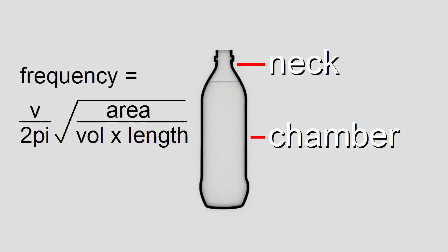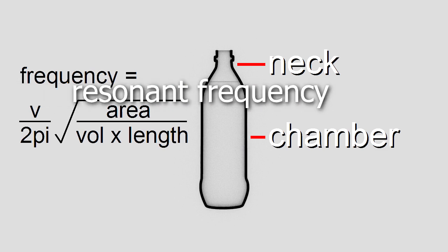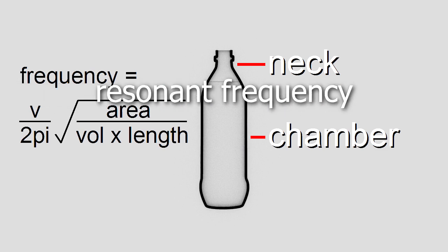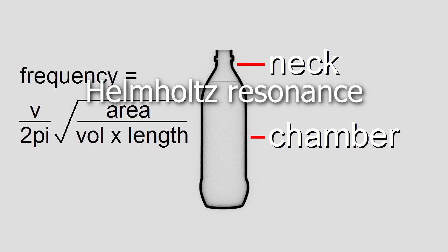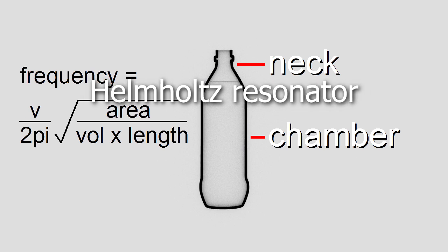But that cycle of air going in and out happens at a consistent frequency, determined by things like the speed of sound in air, the cross sectional area of the neck, the volume of the bottle here, and the length of the neck. Basically this formula. This frequency is called the resonant frequency. More specifically, this is Helmholtz resonance, and the bottle is called a Helmholtz resonator.